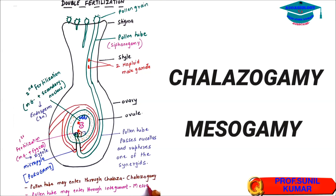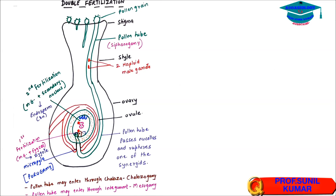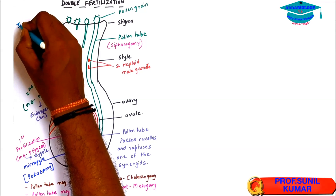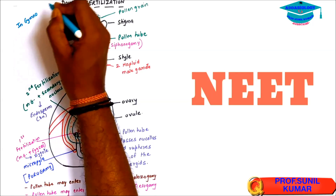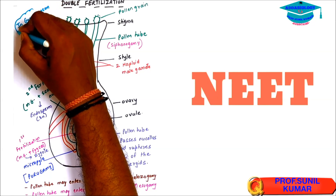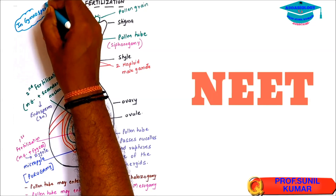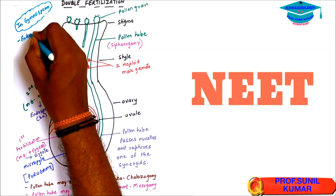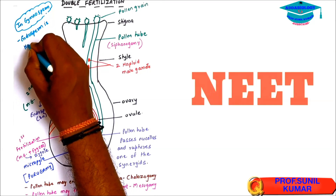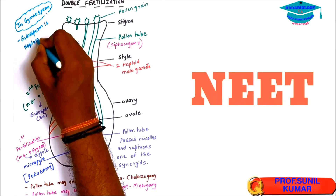Double fertilization is the only feature of angiosperms — gymnosperms do not undergo double fertilization. In gymnosperms, the endosperm is haploid; it does not have the 2n or 3n set. Hope you have understood the concept of double fertilization.